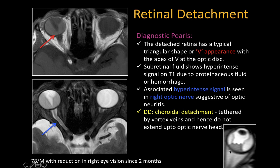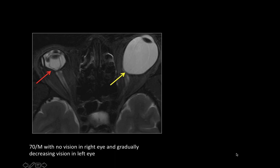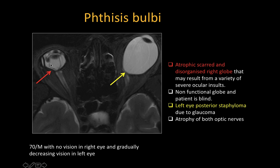This 70-year-old male with no vision in the right eye and gradually decreasing left eye vision: the right globe is completely atrophic, disorganized, and scarred — this is phthisis bulbi — with abnormal signal and thinning of the right optic nerve. On the left side, there is posterior staphyloma with thinning and stretching of the uveo-scleral coat secondary to glaucoma, along with atrophy of the left optic nerve.